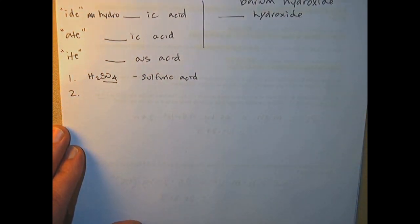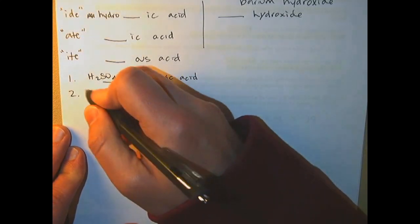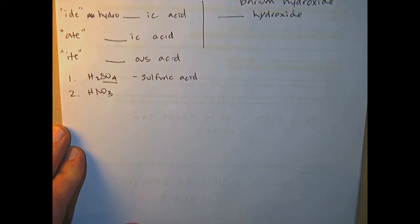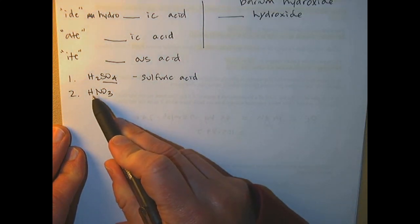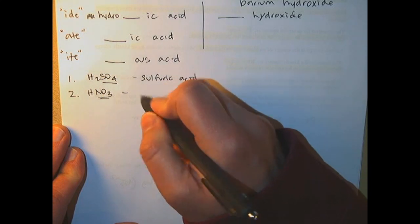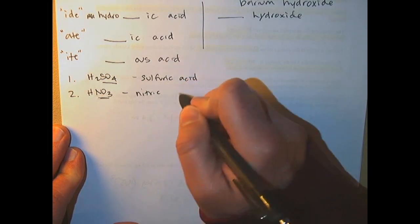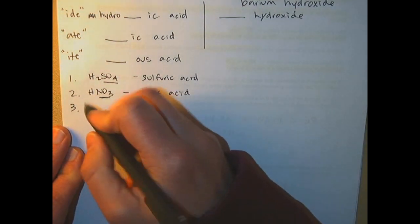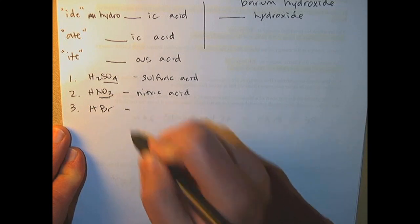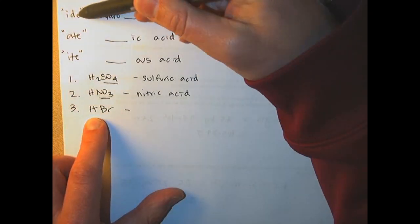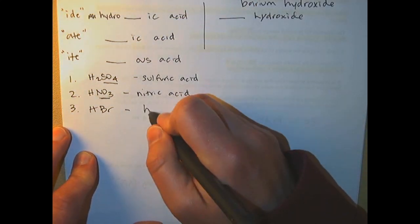For number two, you can ignore the H, but you have NO3 which is called nitrate. ATE becomes IC, so this is called nitric acid. If they're off the periodic table — like HBr — you would call it hydrogen bromide in the old name, because it's off the periodic table you give it the IDE ending. Then since it ends in IDE, you call it hydrobromic acid.